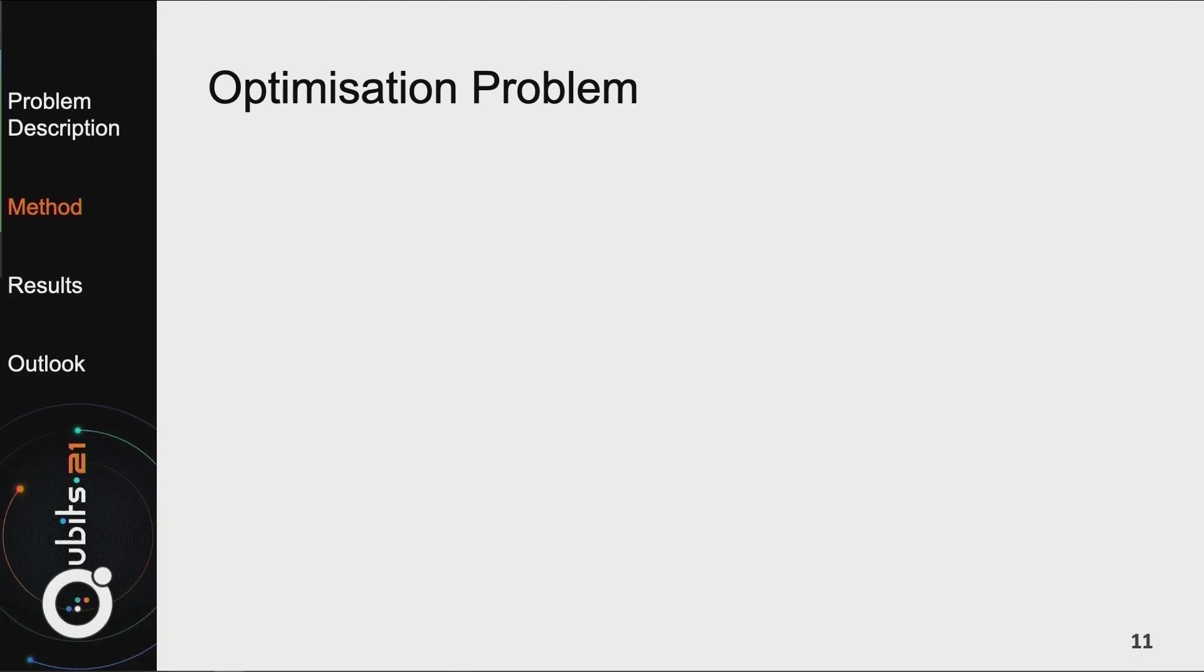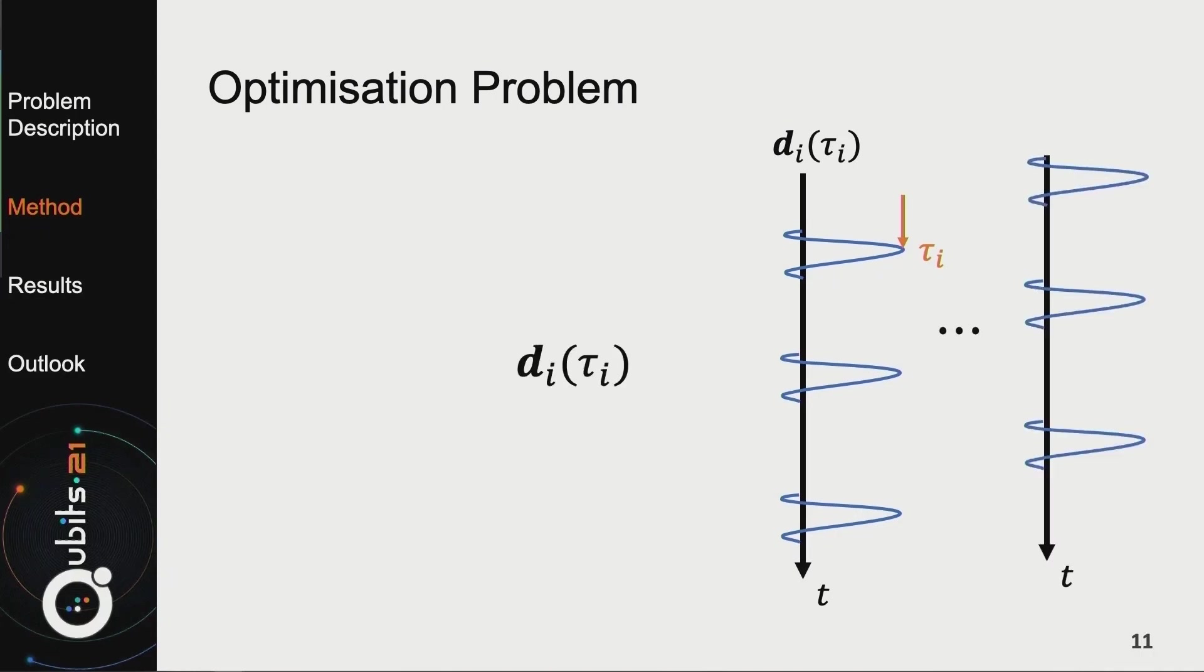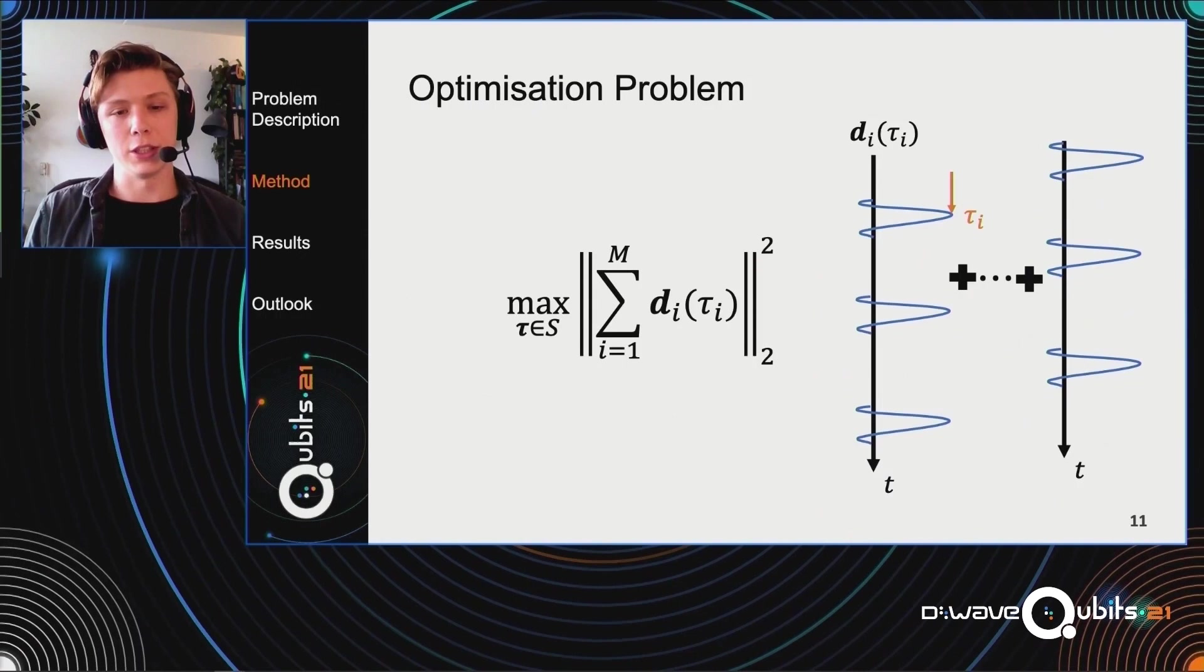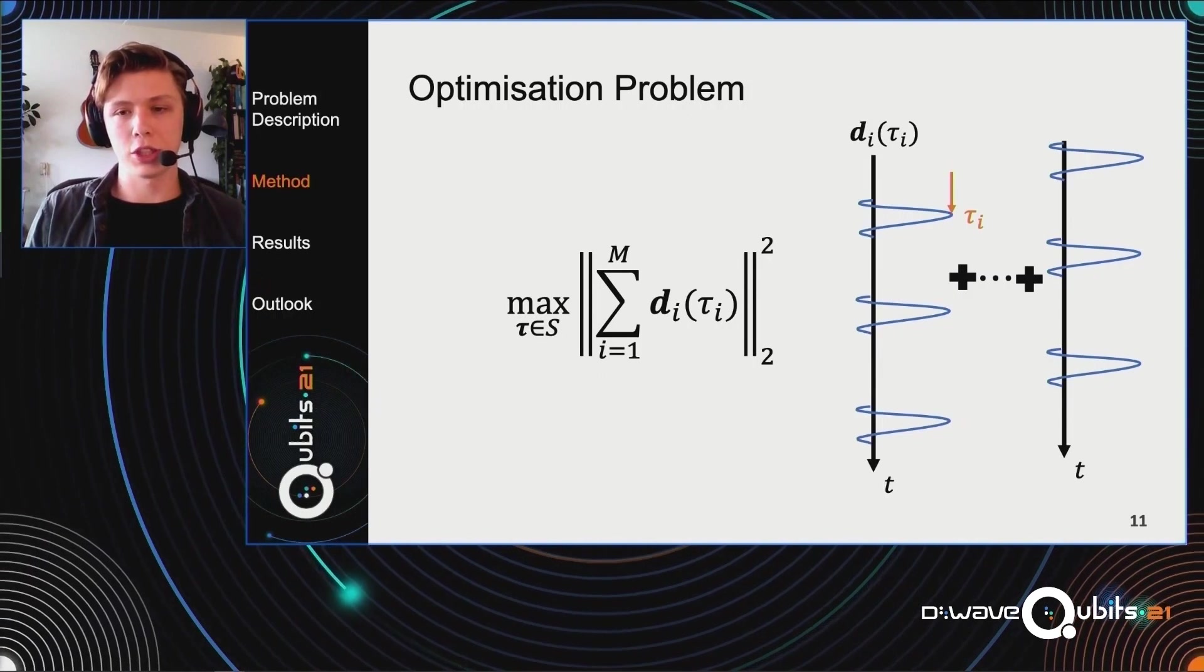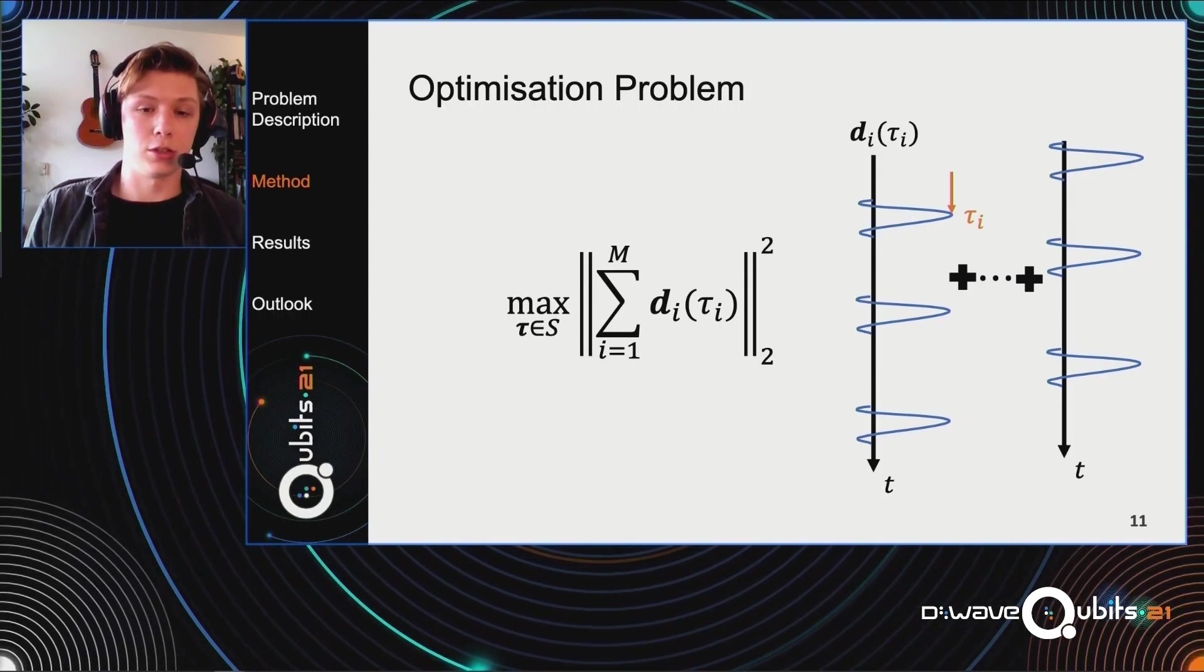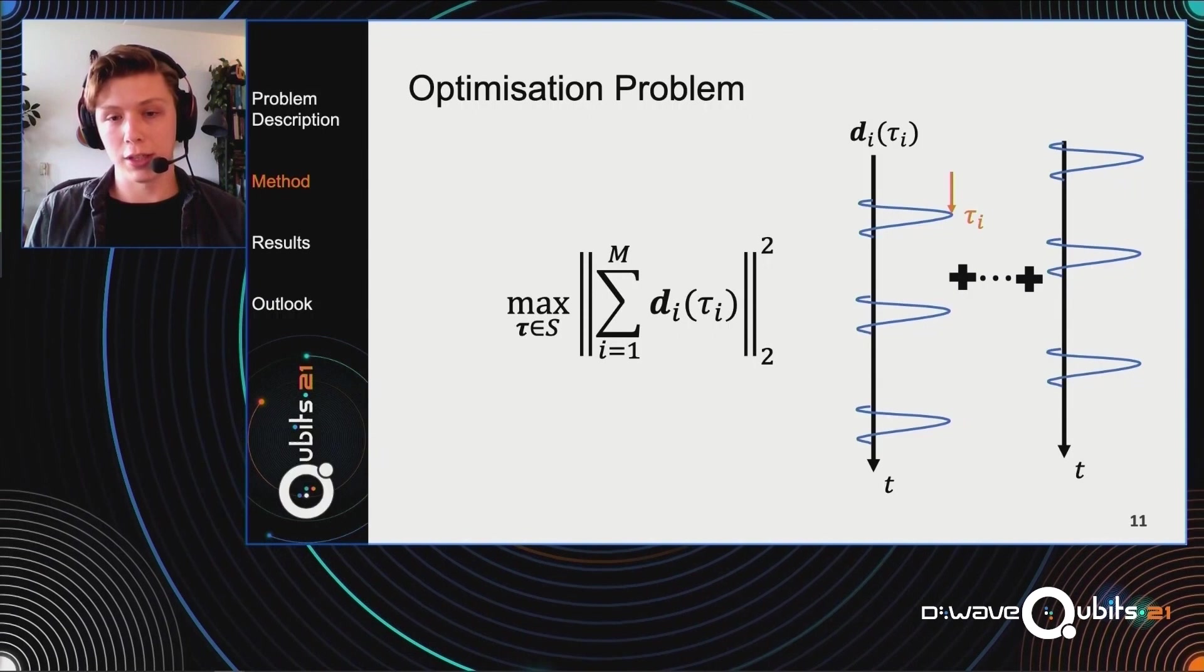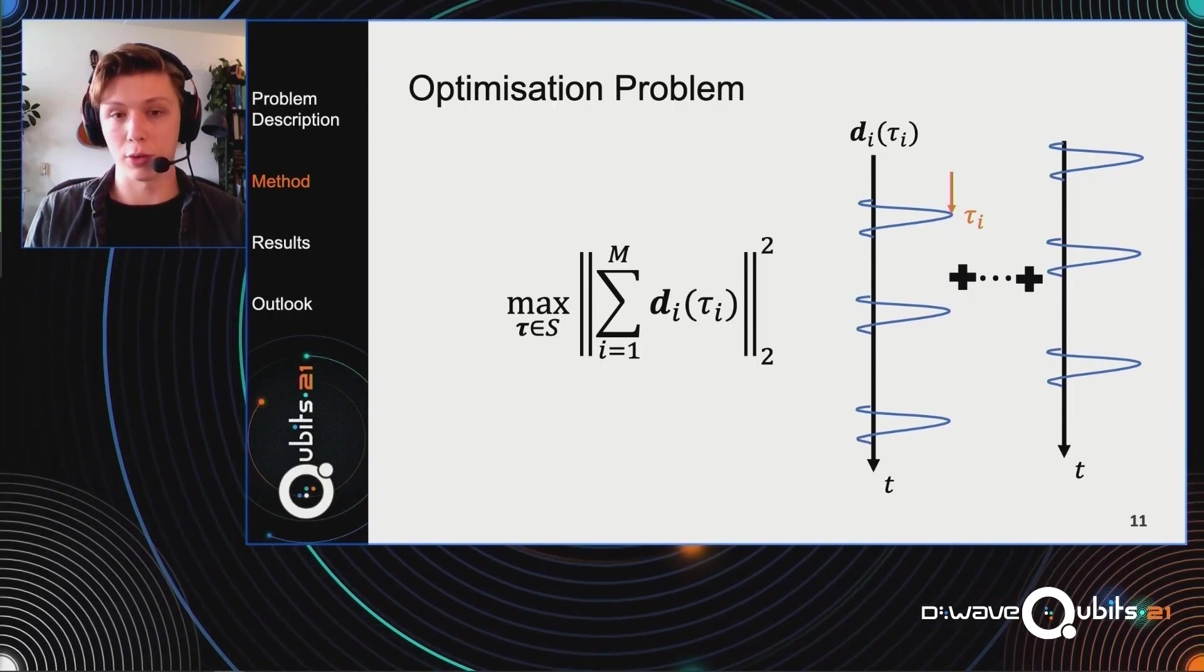I'm going to show you the classical optimization problem. For that, I will need some notation. Here you see a trace, and I'm going to denote that with d subscript i, where the d stands for data. When I now move this trace by a static of tau i like this, I want to call this trace d_i(tau_i). What we then do is we take lots of these traces, we sum them, and then we take the square Euclidean norm, and we maximize over that. What this basically does, it really emphasizes really large amplitudes, and that is exactly what we wanted. However, this cannot be run on the D-Wave quantum annealers right now, because they can't handle these shifts, and they can't calculate this Euclidean norm, and they can't handle these combinatorial optimization problems like this. So we need to make a binary quadratic model of this.